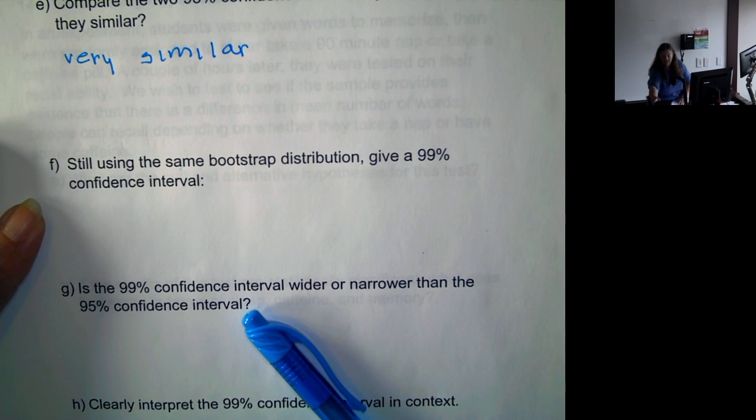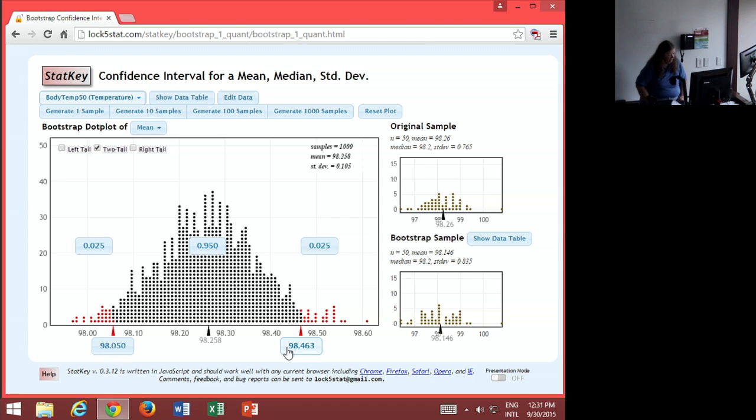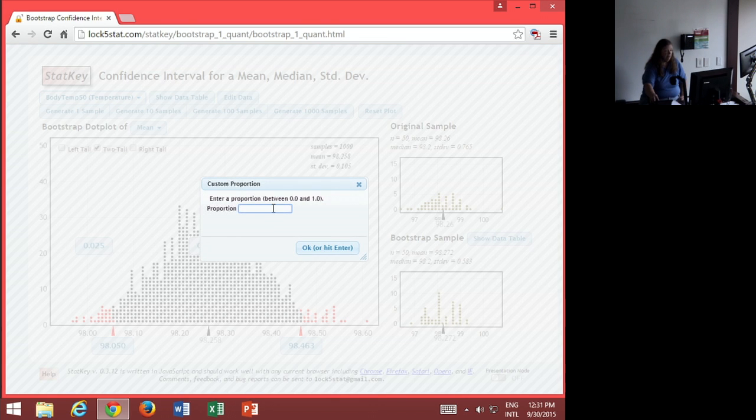Now let's go back to StatKey and we want to find a 99%. At this point in time, we don't know how to find it without using StatKey. So with StatKey, we're going to click on the 95% and now put in 0.99 for a 99% confidence interval.